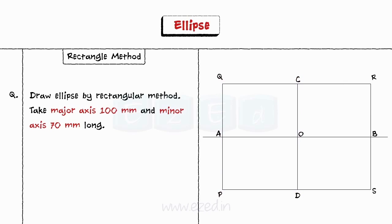Considering left half of the rectangle. Step 3. Divide length AQ and AP into same number of equal parts, say 4, and name the points as 1, 2, 3, 4.